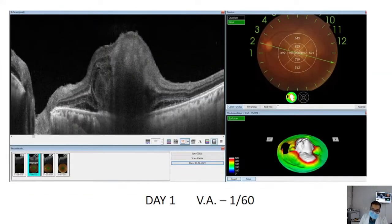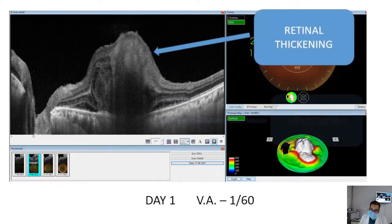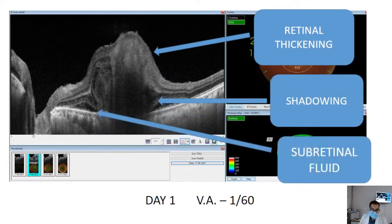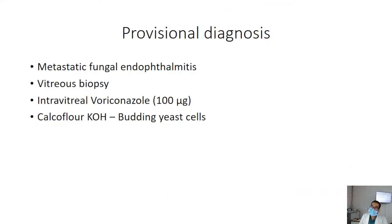On optical coherence tomography of the same eye on day one, we noted there was retinal thickening associated with shadowing along with subretinal fluid accumulation. A provisional diagnosis of metastatic fungal endophthalmitis was made. A vitreous biopsy was taken as a first step, and intravitreal voriconazole was injected along with intravitreal ceftazidime and vancomycin. On vitreous biopsy with calcofluor white stain, budding yeast cells were found.